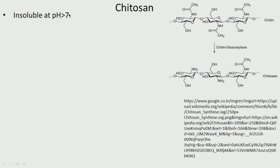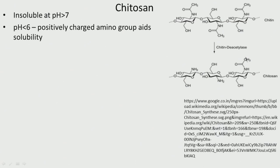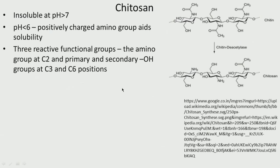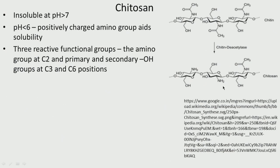To make chitosan we use a deacetylase enzyme to remove the acetyl group, forming NH2. The degree of deacetylization can vary from 30 to 90%. We can increase solubility further by deacetylizing more. It is insoluble at pH greater than 7, but at pH less than 6 the positively charged amino groups aid solubility. Looking at the functional groups: we have the amino group at C2 position, primary and secondary alcohol — the primary OH at C6 and secondary OH groups at C3. All these help in functionalizing this polymer at multiple positions, so it is highly functionalizable.